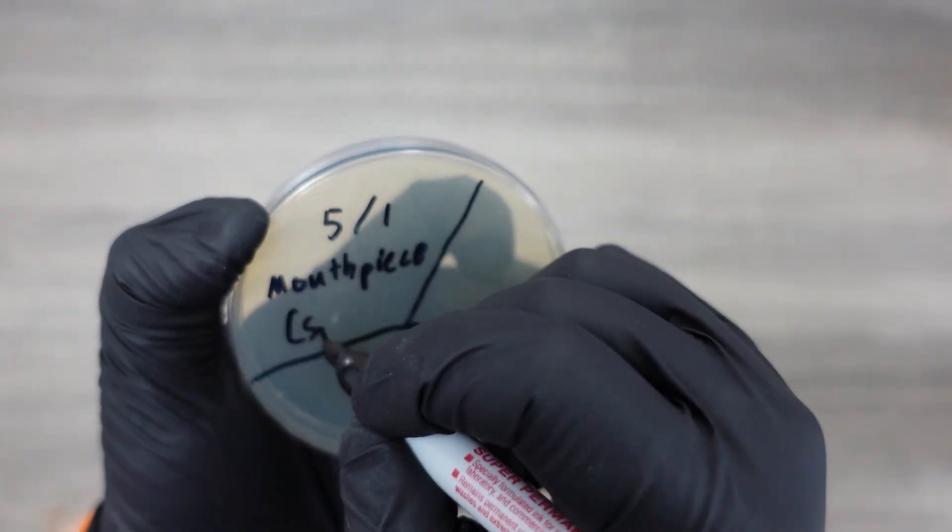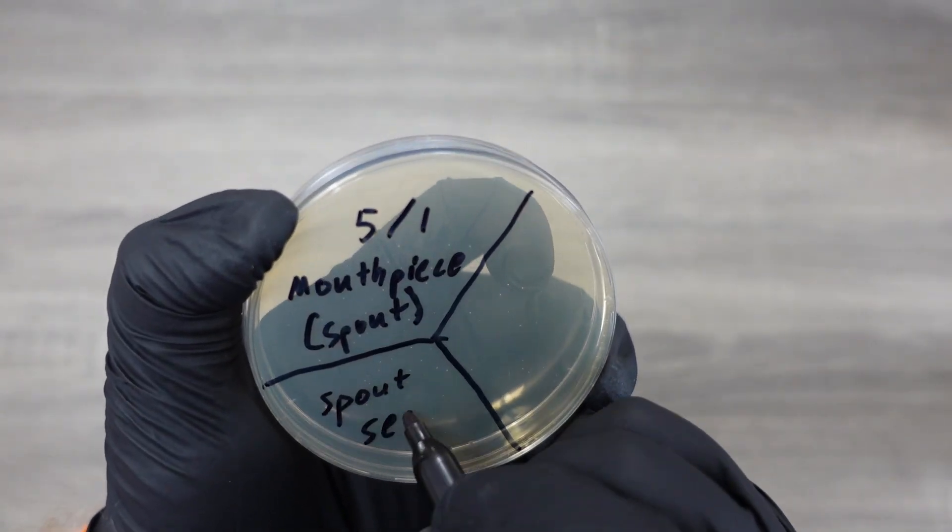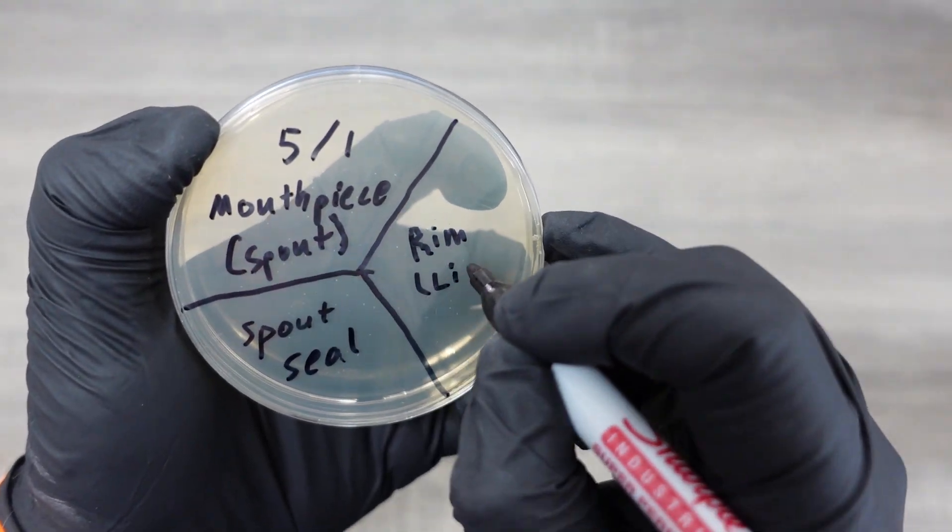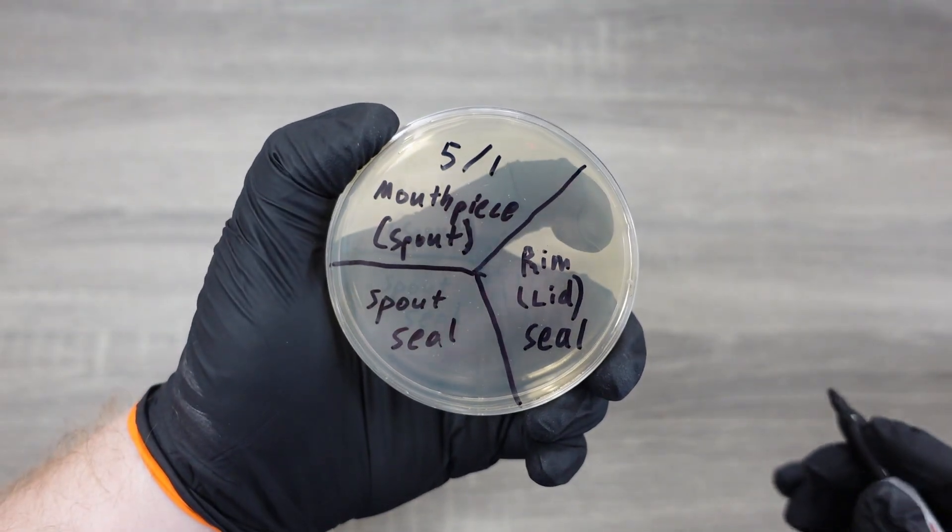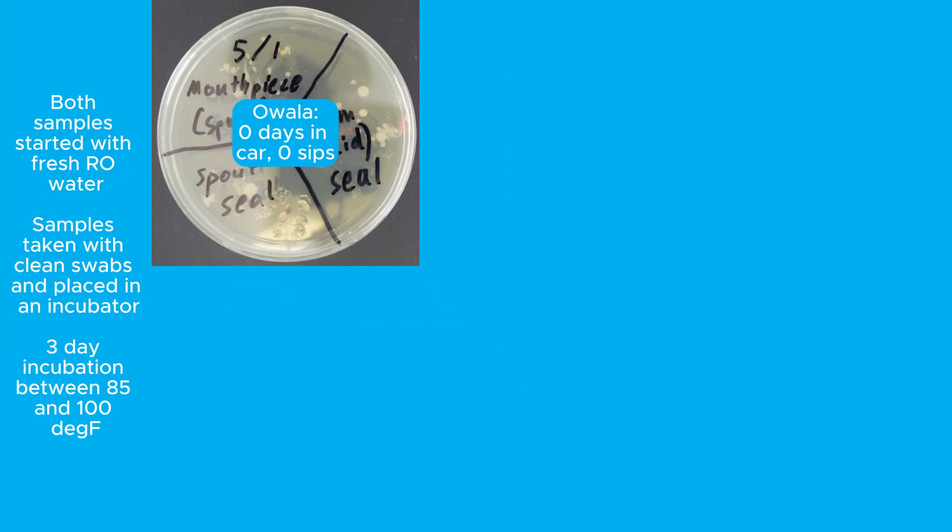As mentioned before, each one of these petri dishes has samples from three parts of the Owalla: the spout, the spout seal, and around the rim. After three days in the incubator, the first sample taken right after filling the bottle showed fairly low amounts of bacteria growth. There are a few colonies and groupings, but it's not too widespread.